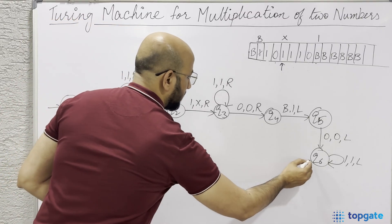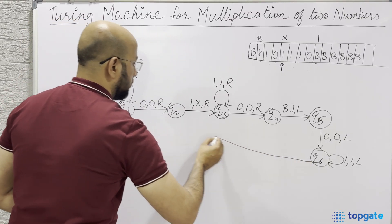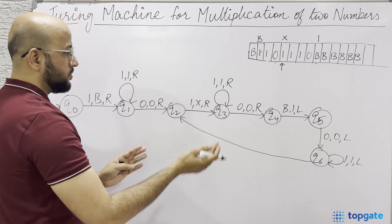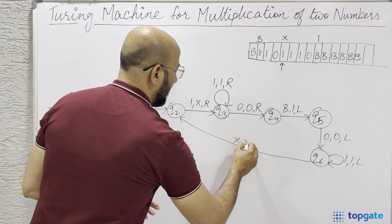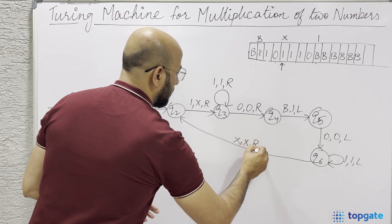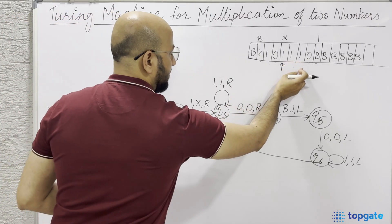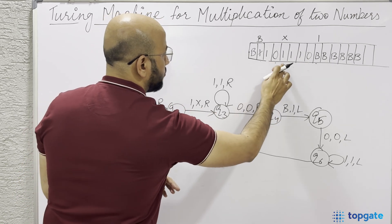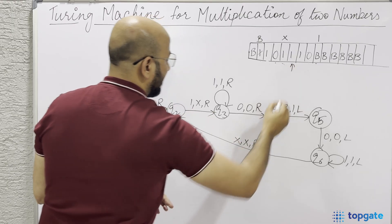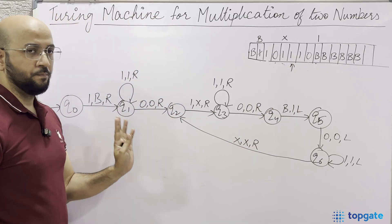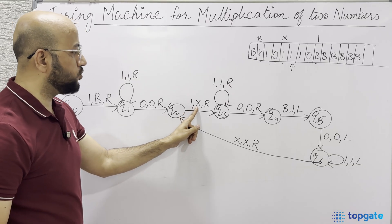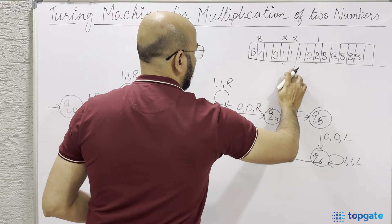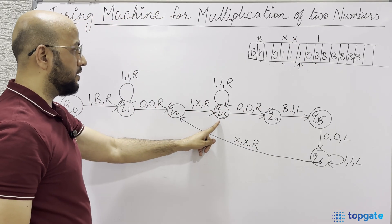From Q6, I come back to Q2. At Q6, if you find an X, keep it as X and go right, reaching state Q2. At Q2, the machine reads the next 1, changes it to X, and the pointer points to the following 1 at state Q3. This starts the second cycle of multiplying the current first-number digit with the second number.